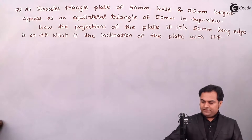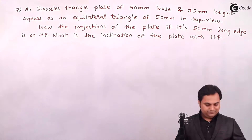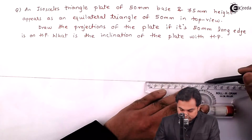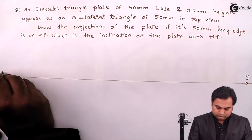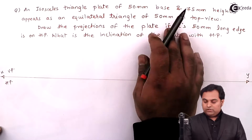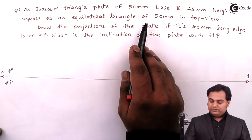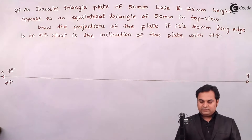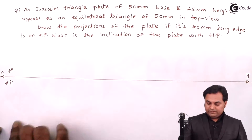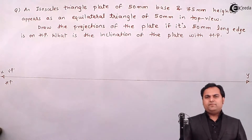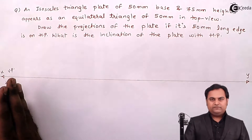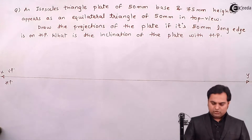First I'll draw the XY line and then explain the conditions given in the problem. Since it appears as an equilateral triangle in the top view, it means the isosceles triangle is in HP. The 50 mm long edge is on HP, meaning the entire isosceles triangle is in HP. I have to keep that edge on the left-hand side, as we are taking the reference for projections of planes on the left-hand side.